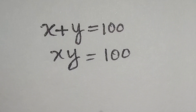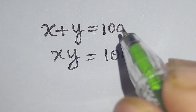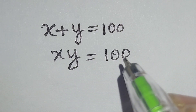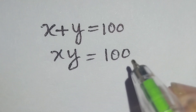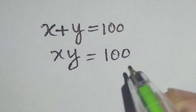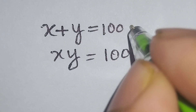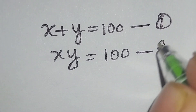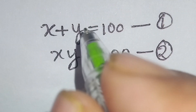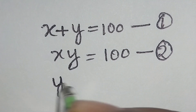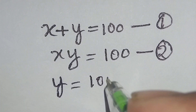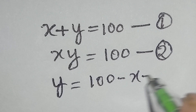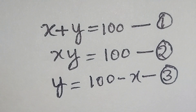Hello, this is a nice math problem. x plus y is equal to 100, and x times y is equal to 100. We have to find the value of x and y. Let's start the solution. This is equation 1, and this is equation 2. From equation 1 we get y is equal to 100 minus x. This is equation 3.